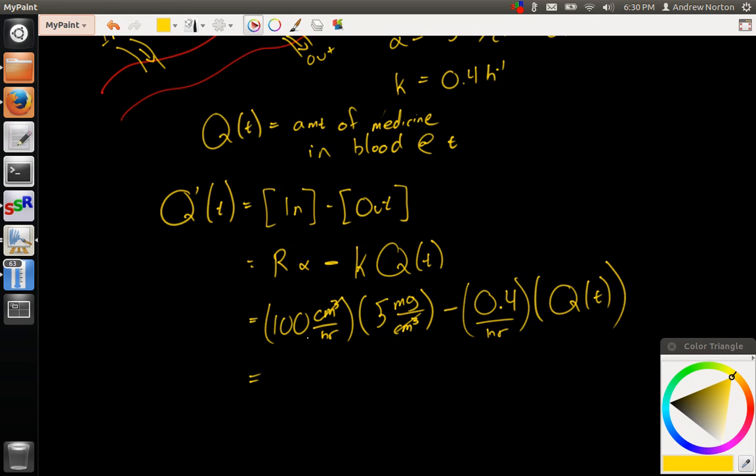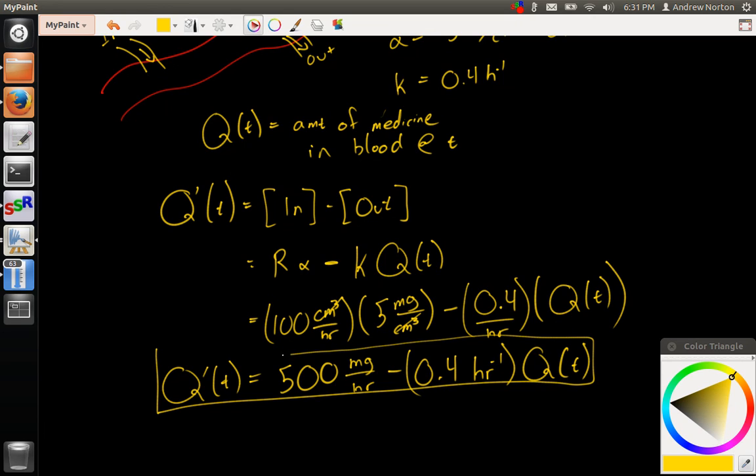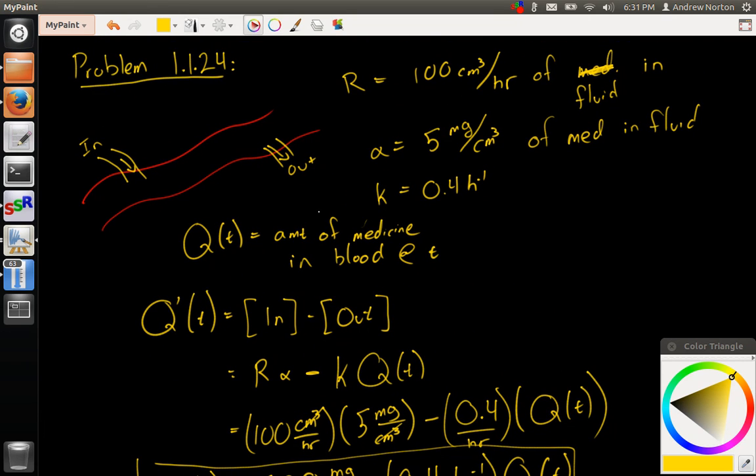So when all is said and done, that would be 500 milligrams per hour minus 0.4 hour inverse Q of T. So this is our differential equation. And we found that by doing in minus out. This is a standard mixing sort of problem. Check back on my channel for any other questions on differential equations.